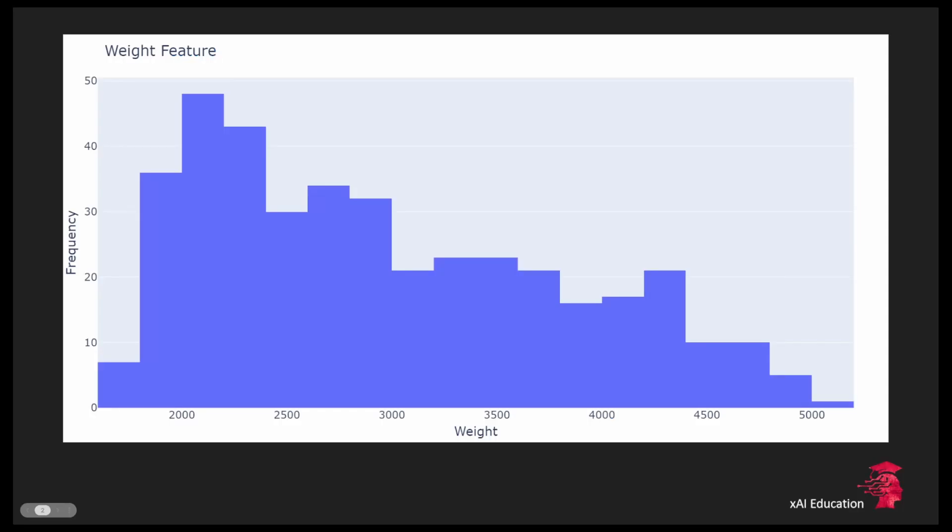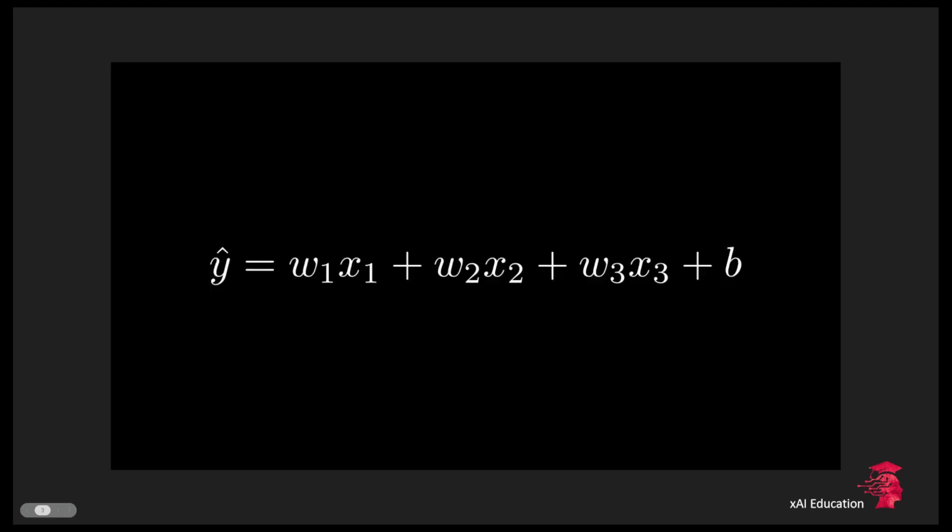As you can see the weight feature goes from zero to over five thousand. Now imagine you have a model like the following. Our model would be a simple linear regression model where each feature value is multiplied with the respective weight plus we got also a bias. Now imagine x1 is our weight feature and x2 and x3 are other features that have values in between zero and one. Do you see the problem here?